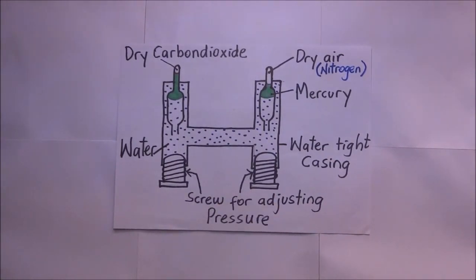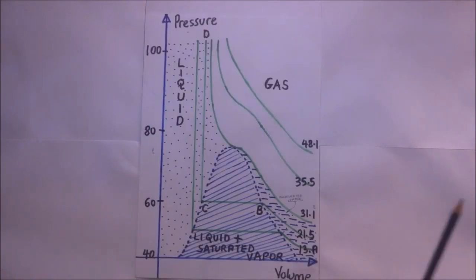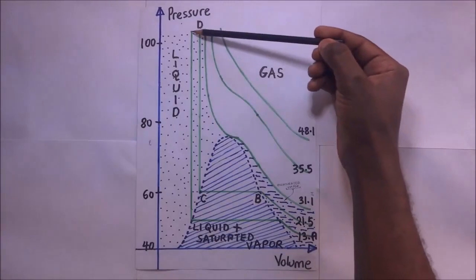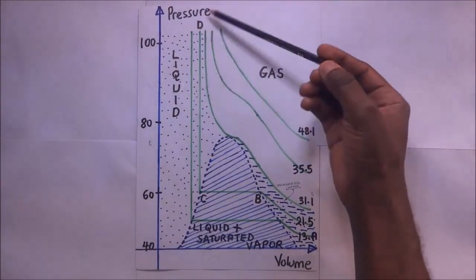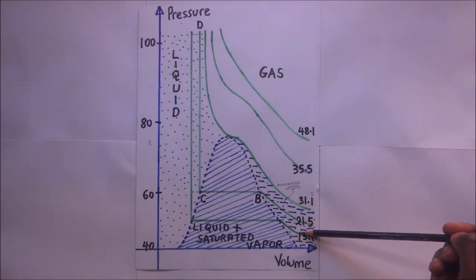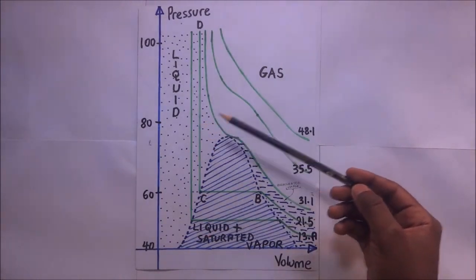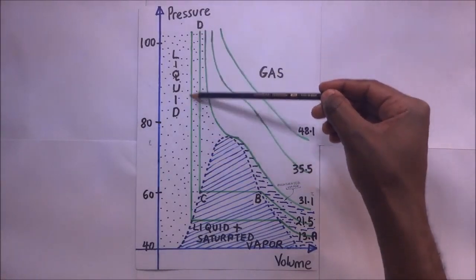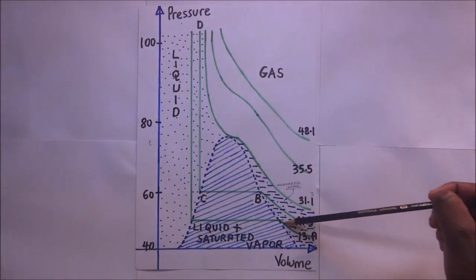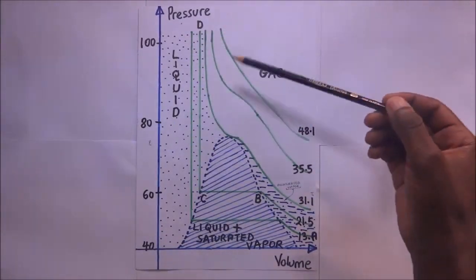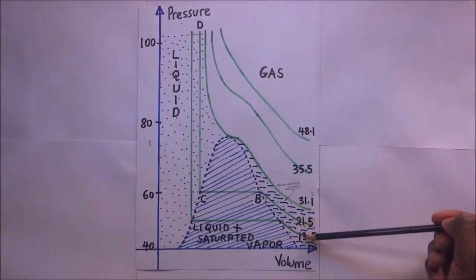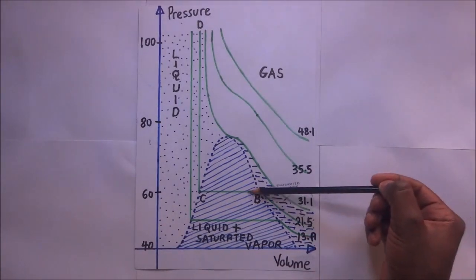When Andrew kept carrying out that experiment, he came up with a graph — a graph of pressure against volume. These green lines are isothermals. For example, the first one is an isothermal at a temperature of 13 degrees Celsius, meaning when the constant water bath was at 13°C, the pressure and volume varied along that line. When he raised the temperature to 21.5°C, that is another isothermal.